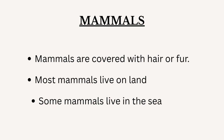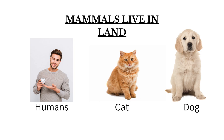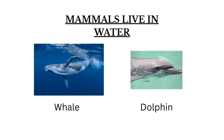Mammals are covered with hair or fur. Most mammals live on land. Some mammals live in the sea. Mammals who live on land include humans, cat, and dog. Mammals who live in water include whale and dolphin.